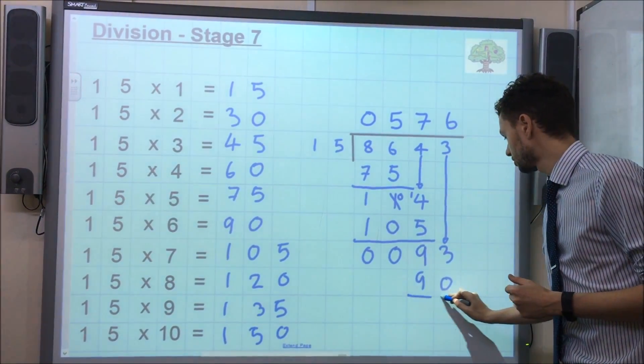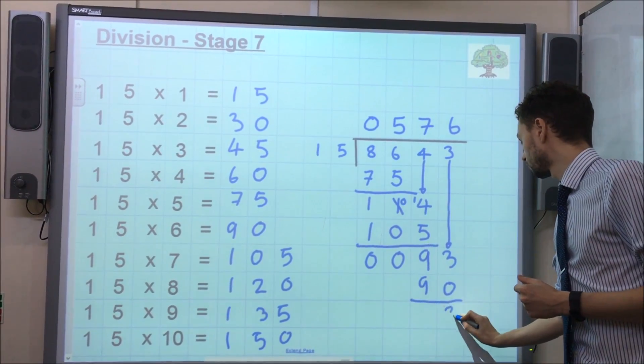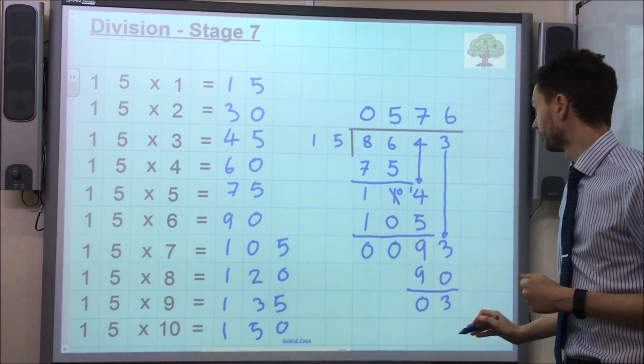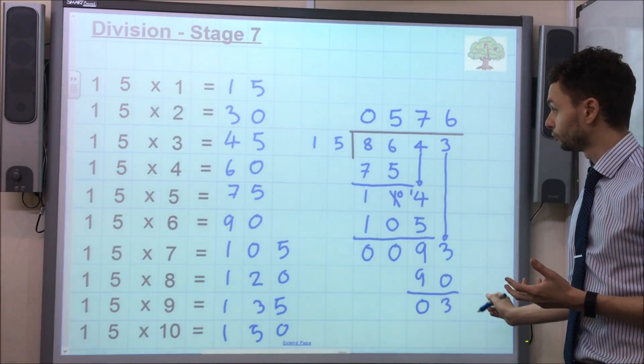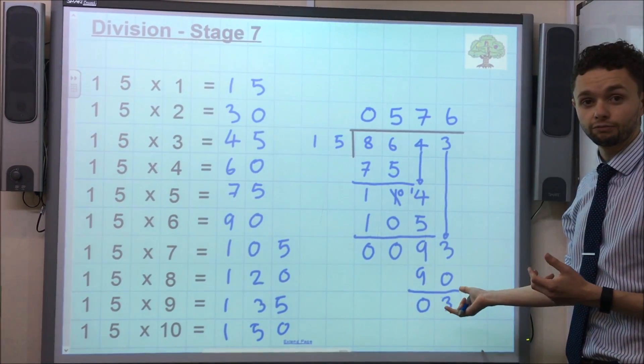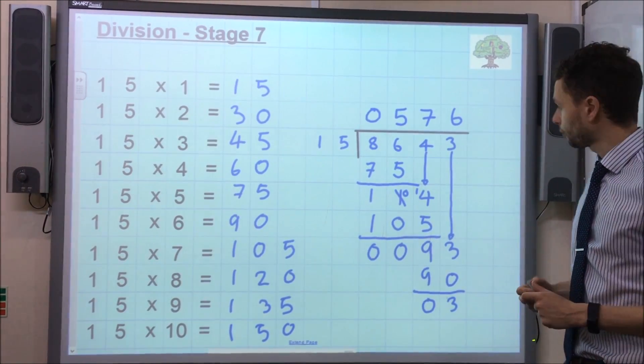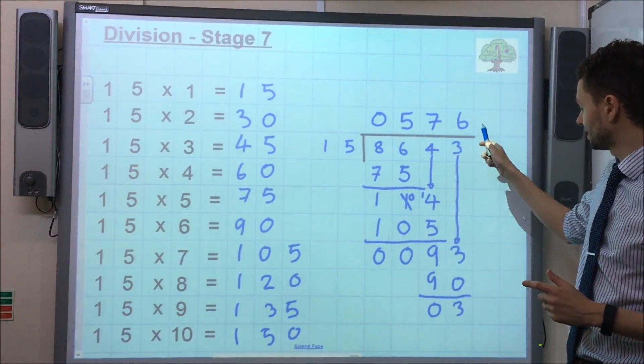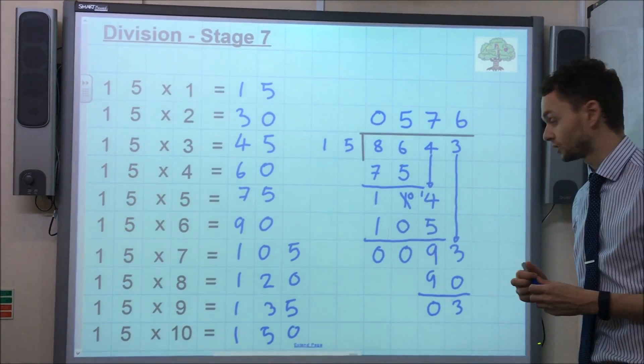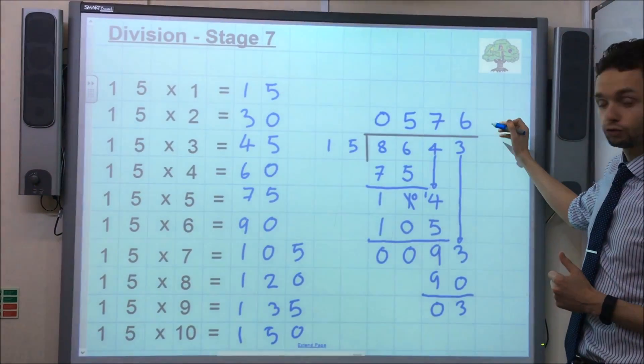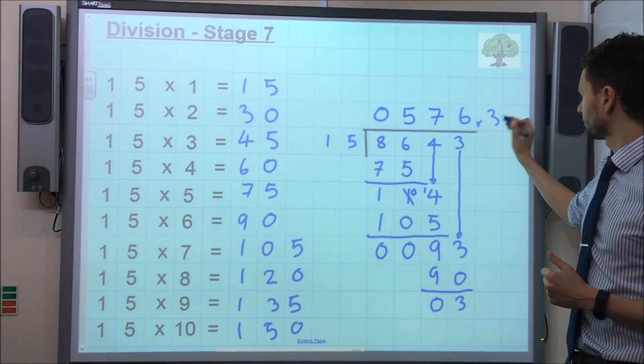Then, we subtract the numbers. 3 take away 0, leaves us with 3. 9 take away 9, leaves us with 0. We've got no more numbers to pull down and 15 will not go into 3. That means we've reached the end of the calculation. So, at the top, we've got our answer, 576. And this number at the bottom is our remainder. It's what's left over. So, 576, remainder 3.